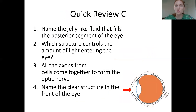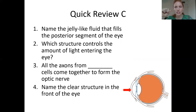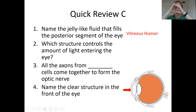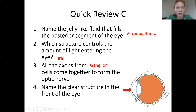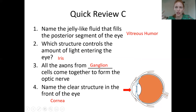Quick review: the jelly-like fluid filling the posterior segment is vitreous humor; the watery fluid in the front is aqueous humor. The structure that controls the amount of light by constricting or dilating is the iris. The photoreceptors synapse with bipolar cells, which synapse with ganglion cells, and all those axons form the optic nerve. The clear structure in the very anterior part of the eye, in front of the iris, is the cornea.